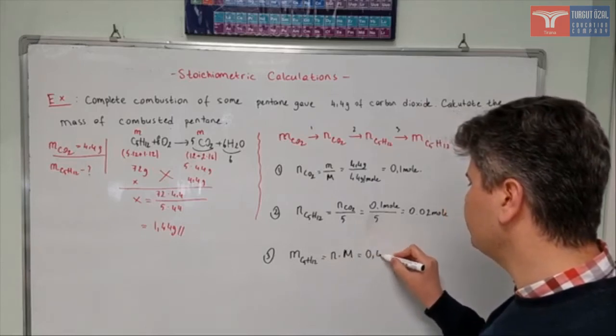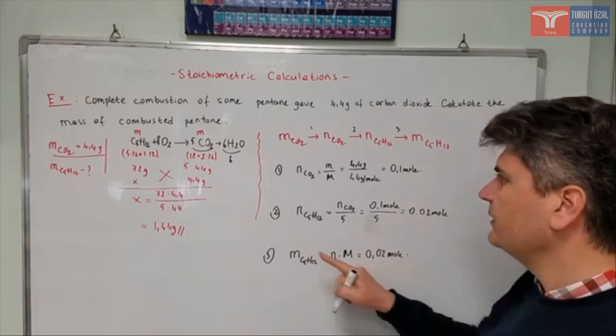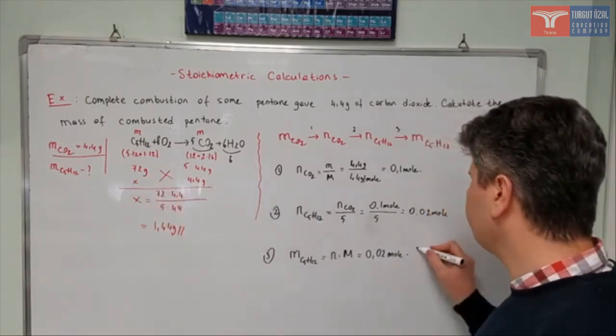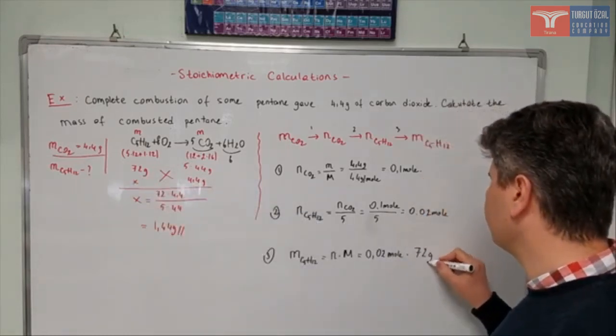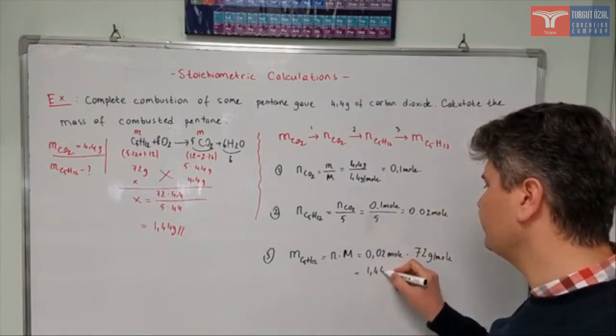Mole number is 0.02 mole, we found it here, times molar mass of it, we have found it here, if you remember. 72 grams per mole. When you multiply them, you'll find the same answer, 1.44 grams.